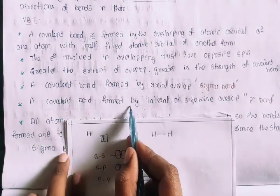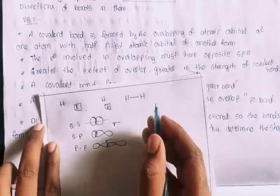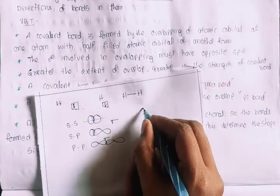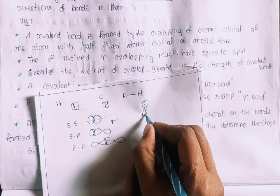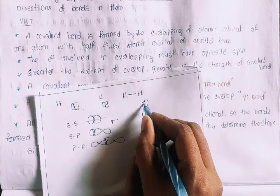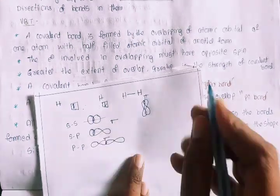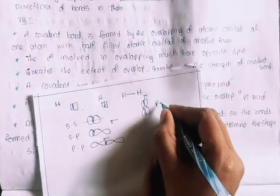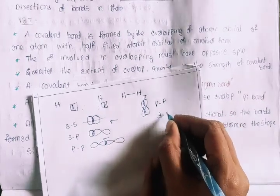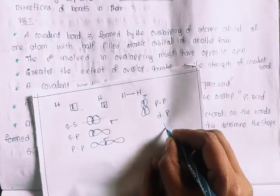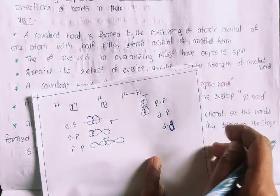The covalent bond formed by lateral or sideways overlap — this side-wise overlap forms a pi bond. PP, DP, and DD sideways overlaps form pi bonds in these orbitals.